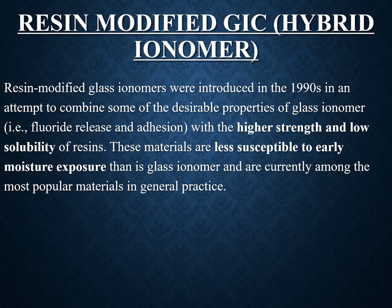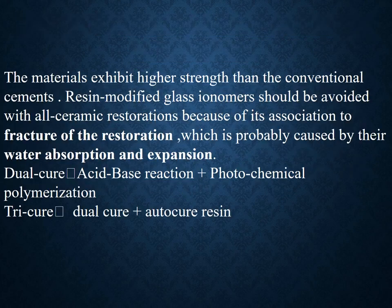Resin modified glass ionomer (hybrid ionomer) was introduced in the 1990s to incorporate glass ionomer properties with the higher strength and low solubility of resins. These materials are less susceptible to early moisture exposure than conventional glass ionomer and are currently among the most popular materials in general practice. However, resin modified glass ionomer should be avoided with all-ceramic restorations because water absorption and expansion can cause fracture. There are also dual-cure and tri-cure types.